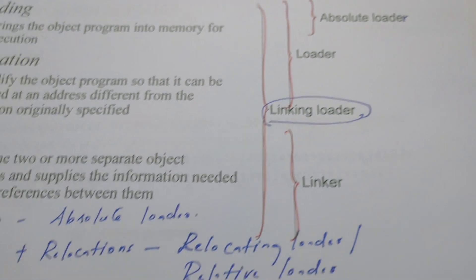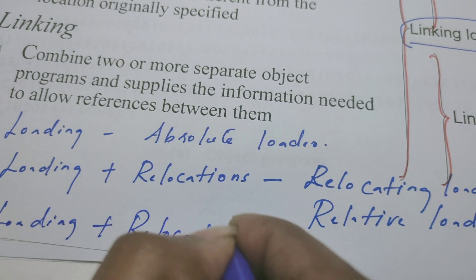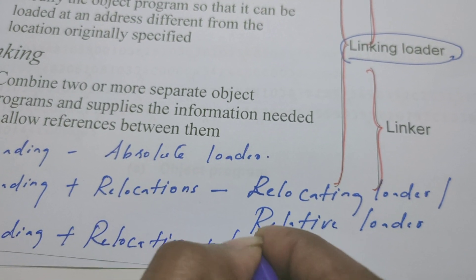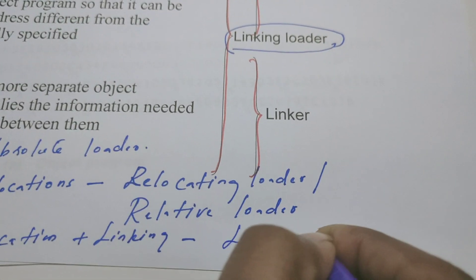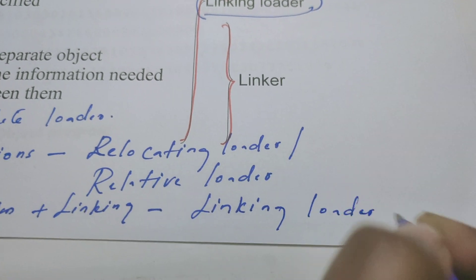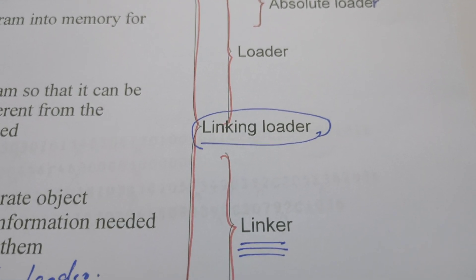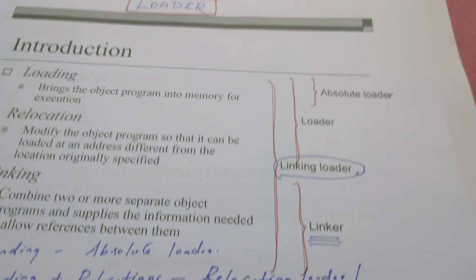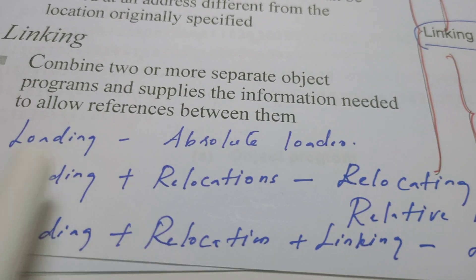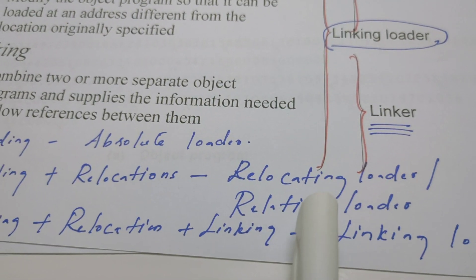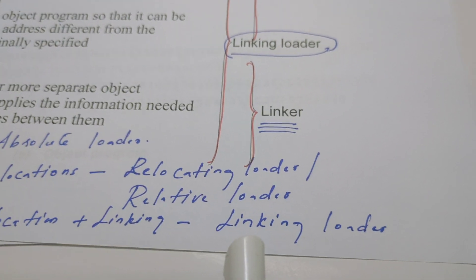If a system software does loading, relocation, as well as linking, we can call that system software a linking loader. So loading plus relocation plus linking all together is a linking loader. If a software does only the task of linking, then that software is known as a linker.